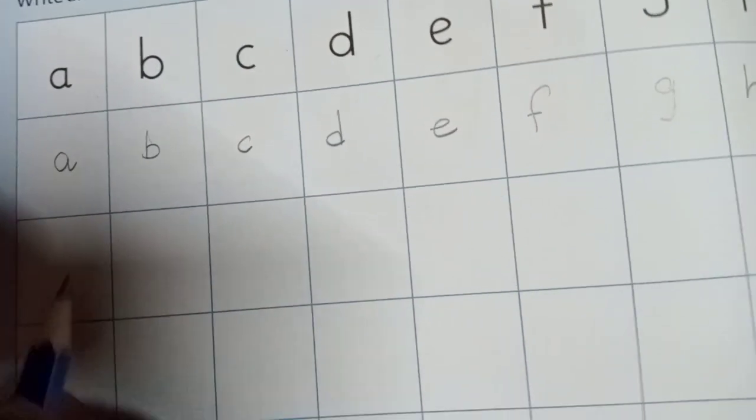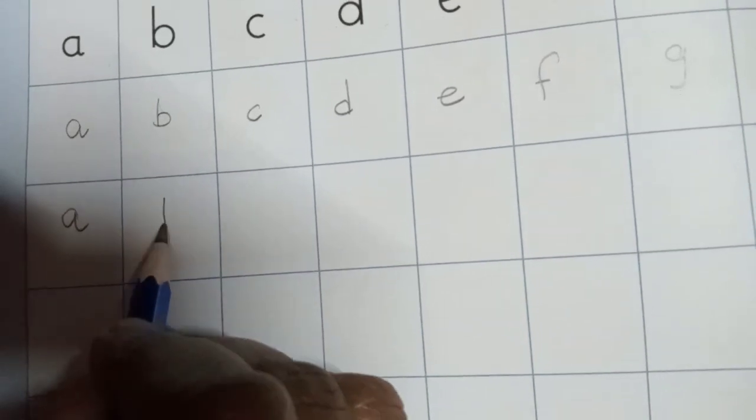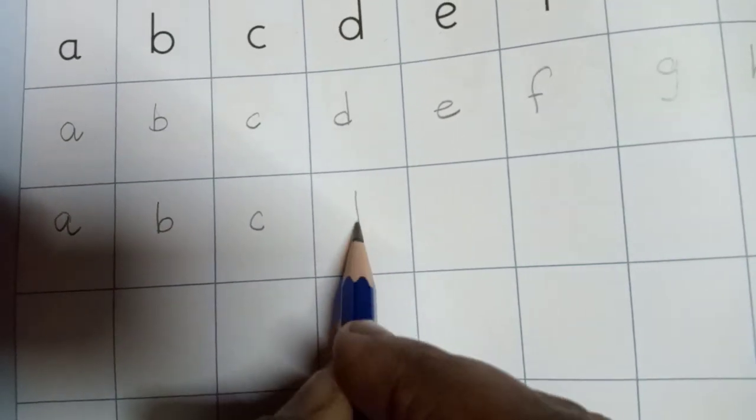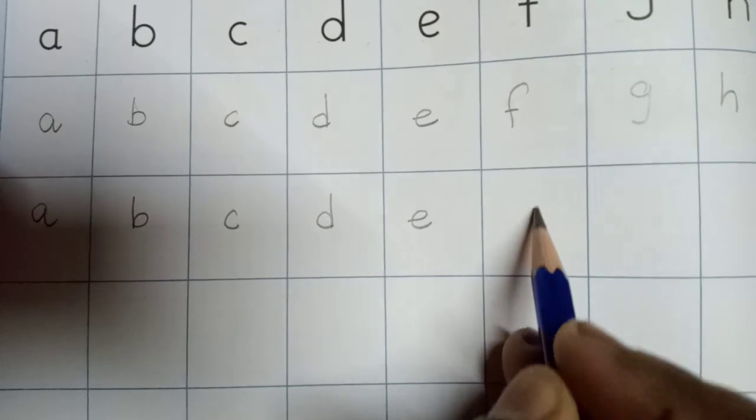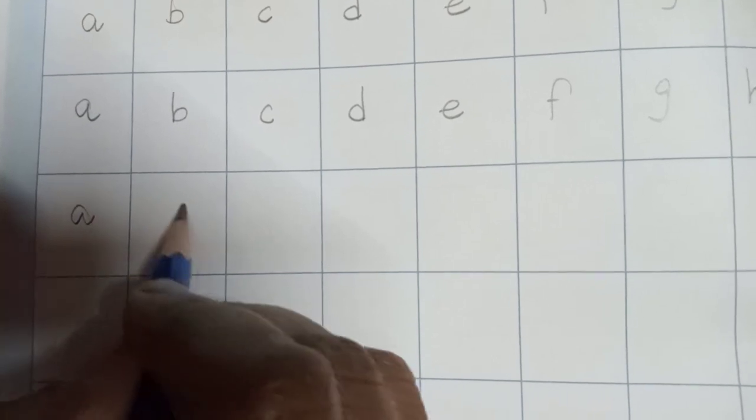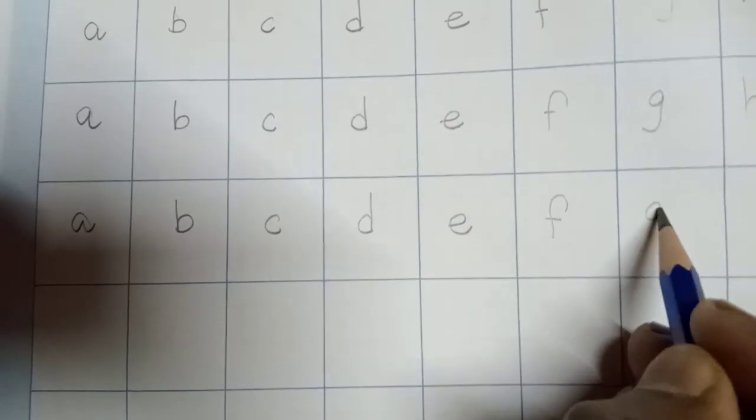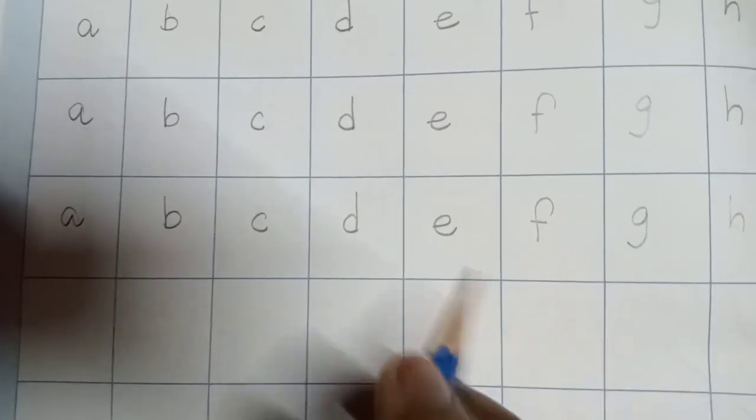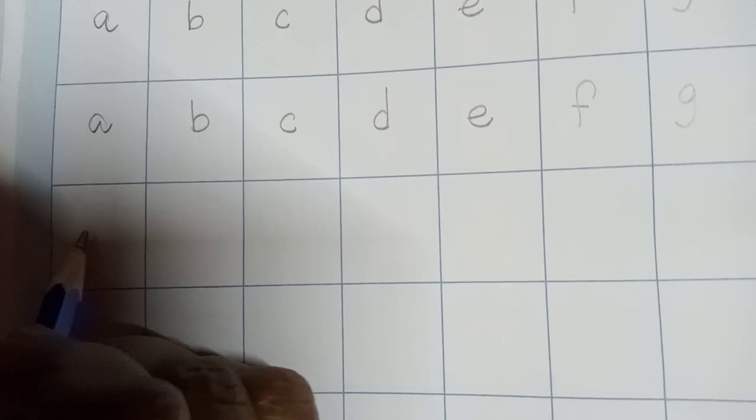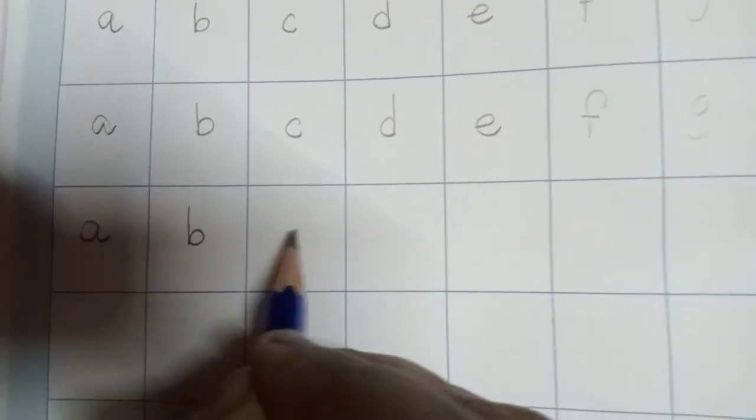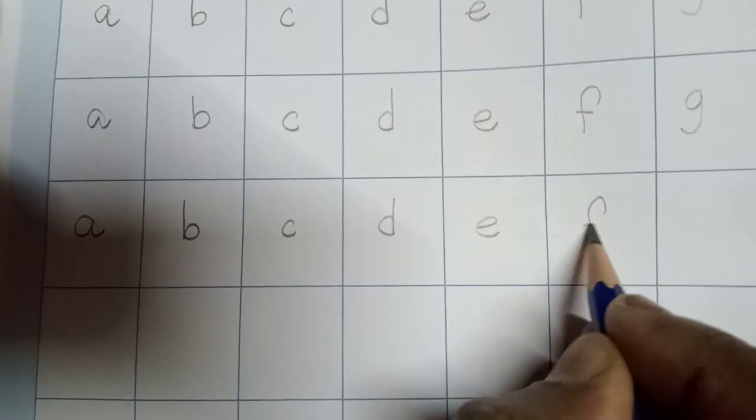You have to write and say: a, b, c, d, e, f, g, h. Now next: a, b, c, d, e, f, g, h. All are in small letters.